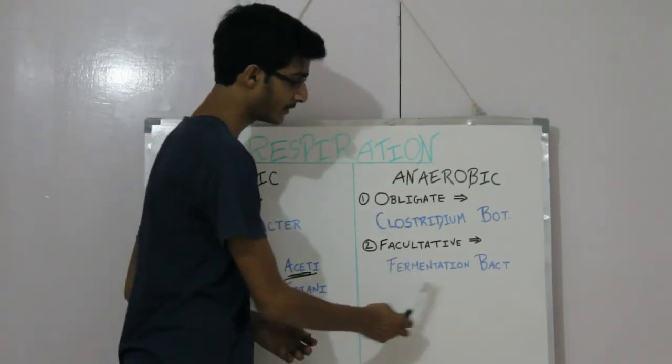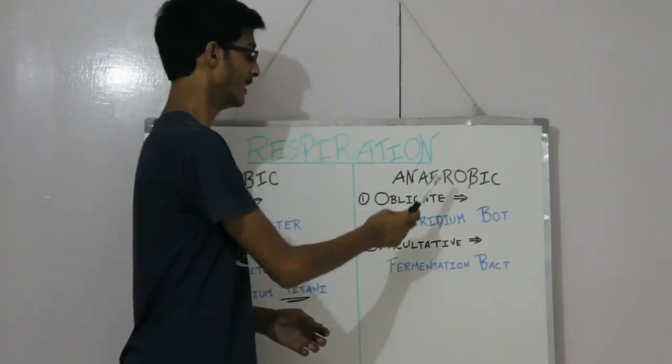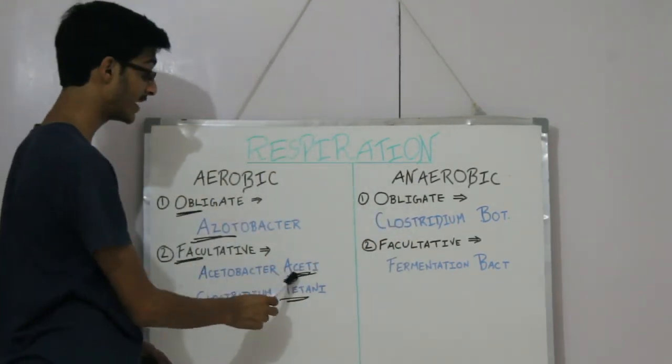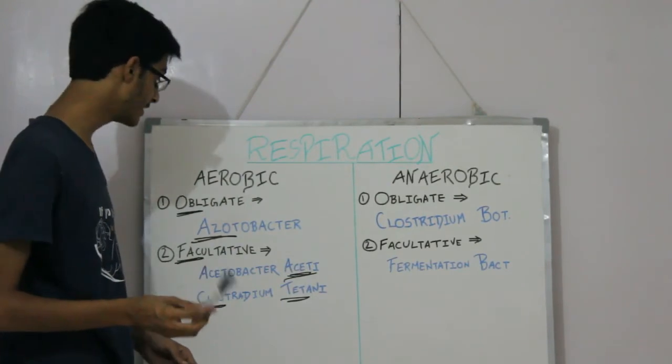And last, the fermentation bacteria - they all come in facultative anaerobic bacteria, except the Acetobacter aceti. This is a very important point.